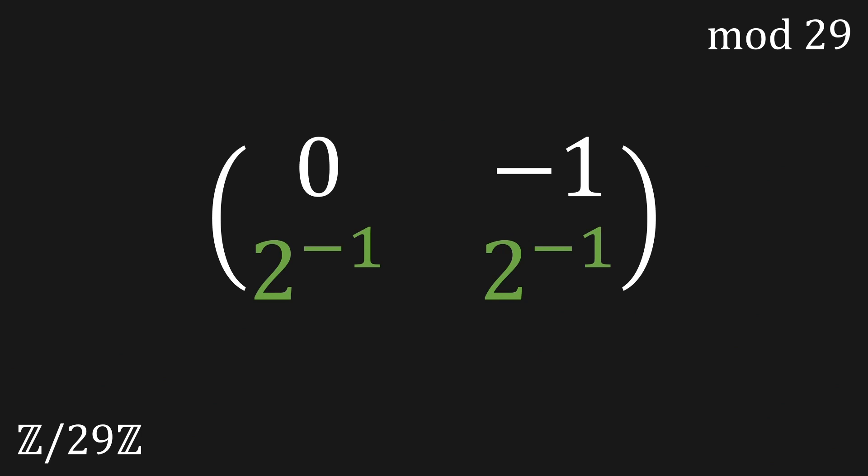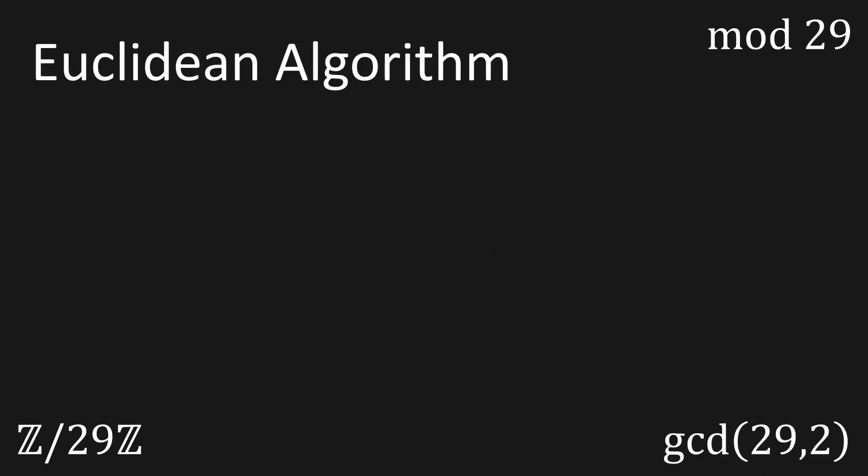What you need to do now is to find the multiplicative inverse of 2 modulo 29. How do you do that? Well by using the extended Euclidean algorithm. First you need to apply the Euclidean algorithm to find the greatest common divisor of 29 and 2.